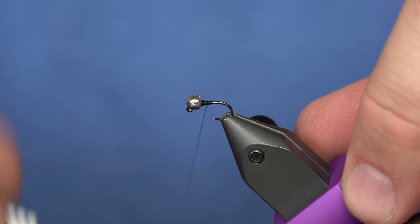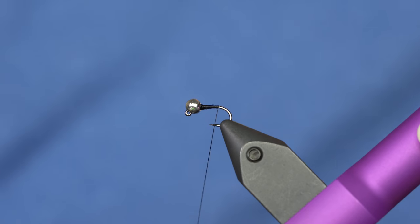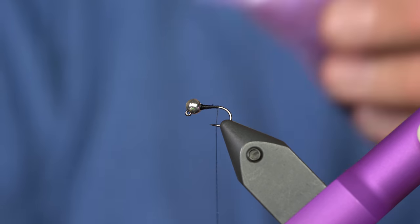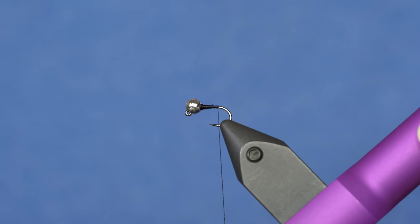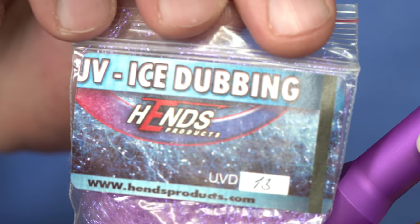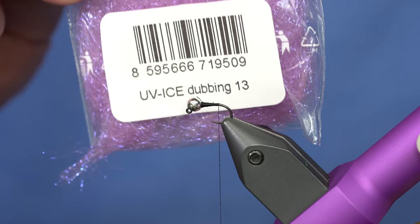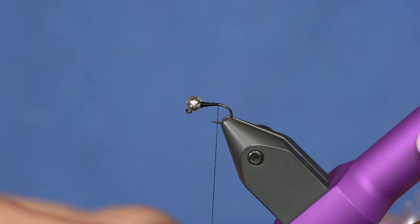So I will dress the hook with thread. I've dressed the hook with thread. The tail for this is actually going to be just this Hends Ice Stub, UV Ice Stub. This is number 13, but anything that's lavenderish or violet like this will do the trick.